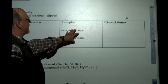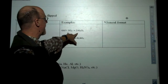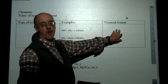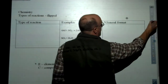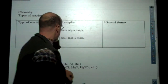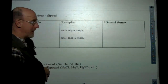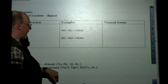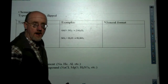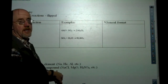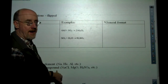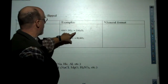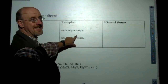For each of these types, I've shown a couple of examples. We're going to talk about the general format first, using symbols: E for element — any single element by itself, which could also be diatomic — and C for compound. We'll use C as a general way to identify compounds, and we'll write out the general formats for these examples.